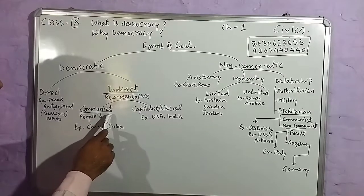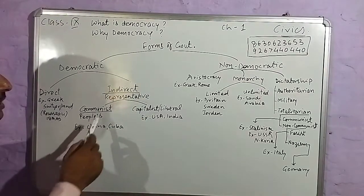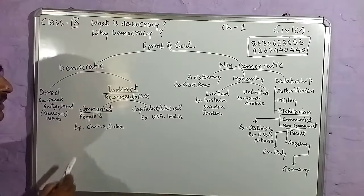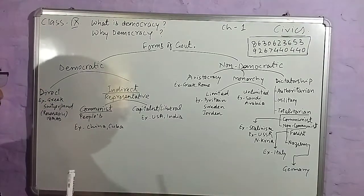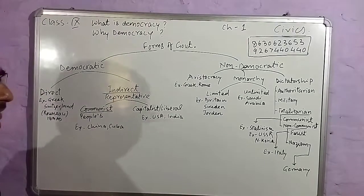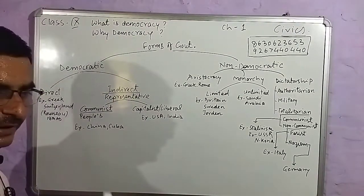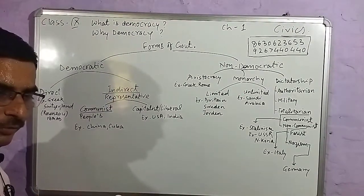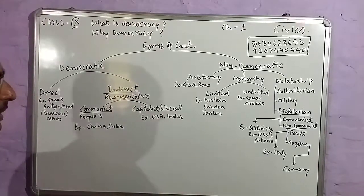Representative democracy can be divided into two parts. The first is communist democracy, also called people's democracy, seen in present-day countries like China or Cuba, where representatives are elected but the choice available to voters is limited.